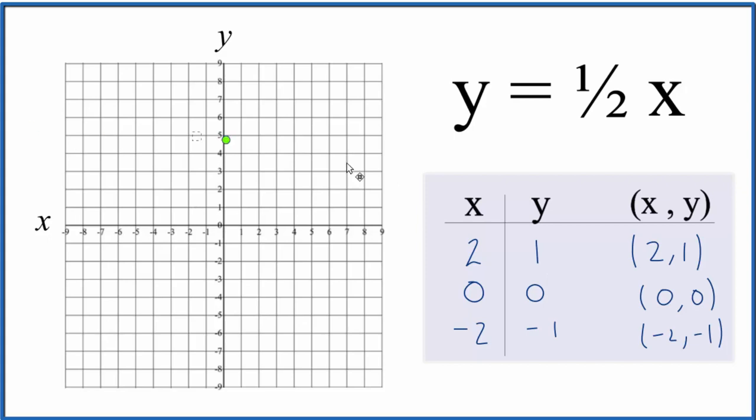So let's graph it. We have x is 2, y is 1. We have x is 0, y is 0, and then we have x is negative 2, and y is negative 1.